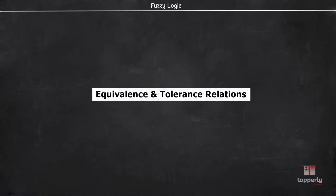Hey everyone, welcome back to Fuzzy Logic Lectures. So far in this lecture series, we have learned about crisp and fuzzy sets, their relations and compositions. Continuing from there, in this lecture, we will learn about tolerance and equivalence relations. We will also discuss examples on these topics so that the concept is well understood. So, let's start our lecture.